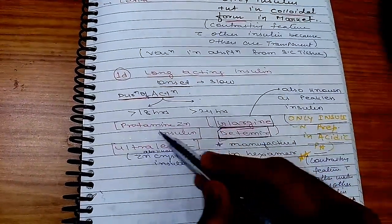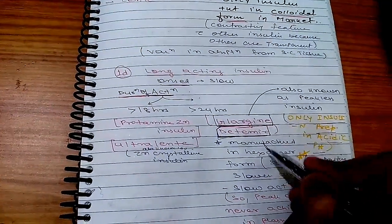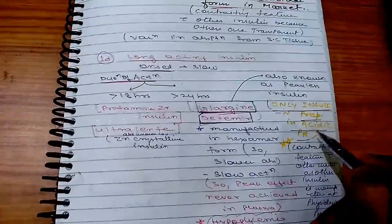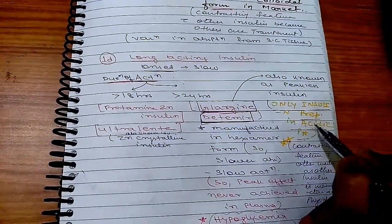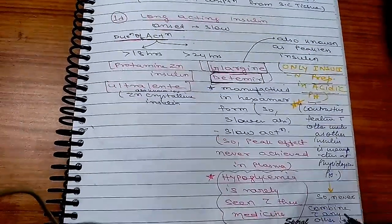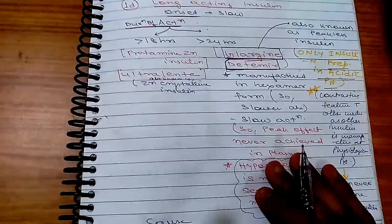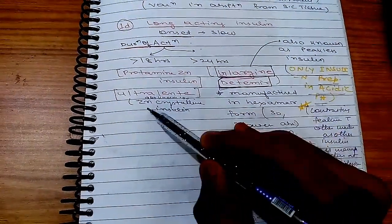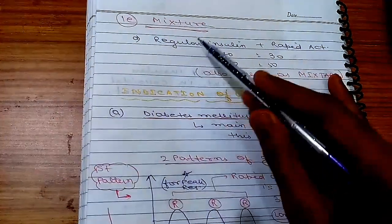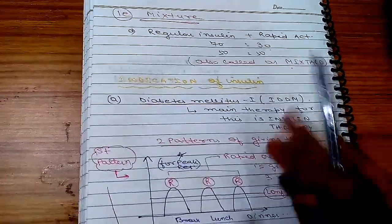The fourth group is long acting insulin: slow onset, duration more than 18 hours (protamine zinc insulin, ultralente) or more than 24 hours (glargine and detemir). This is also known as peakless insulin. Glargine is the only insulin prepared at acidic pH — a contrasting feature, as other insulins are manufactured at physiological pH. Therefore, glargine should never be combined with any other insulin in the same syringe as it can cause precipitation. The last group is a mixture of regular plus rapidly acting insulin in fixed ratios, also known as mixed insulin.